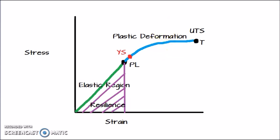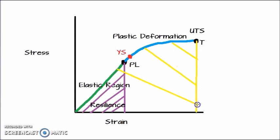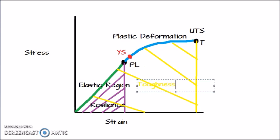Now let me choose yellow color. I will draw a straight line from point T, the fracture point, down to the strain axis. This whole area under the curve from point T is toughness. Toughness is not just from the proportional limit to the fracture point — it's from the beginning of the stress-strain curve till the material fractures. So this entire area under the curve is toughness.